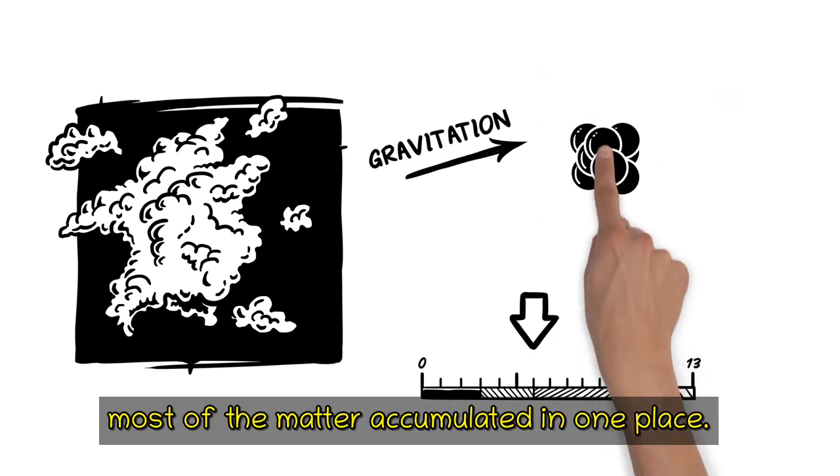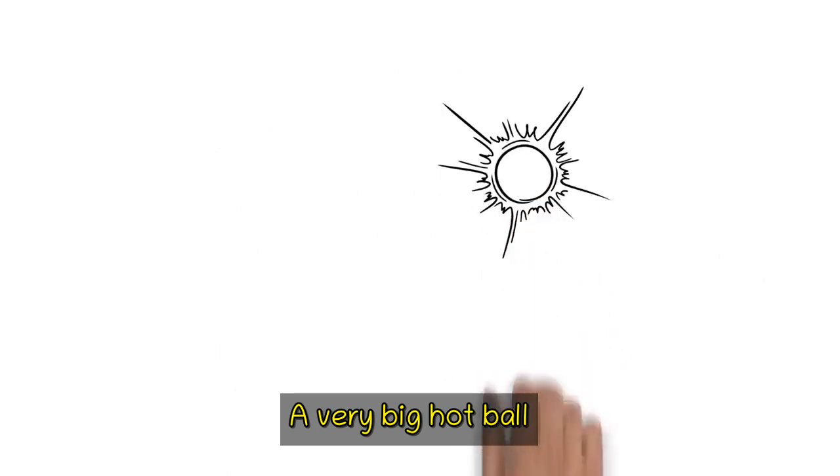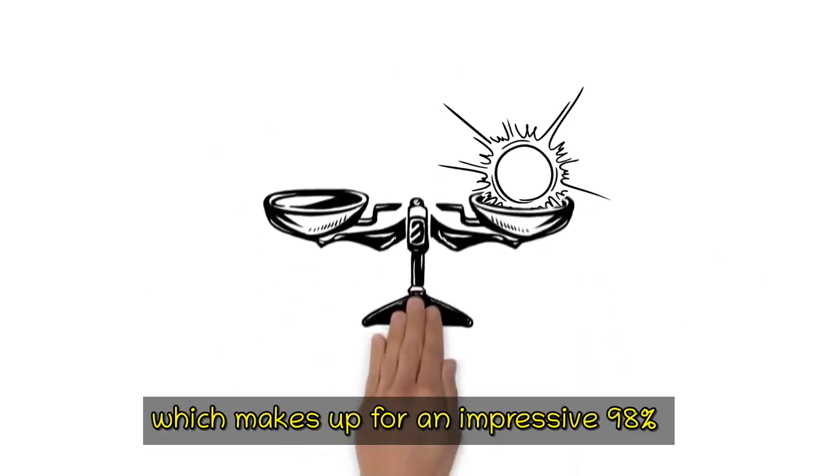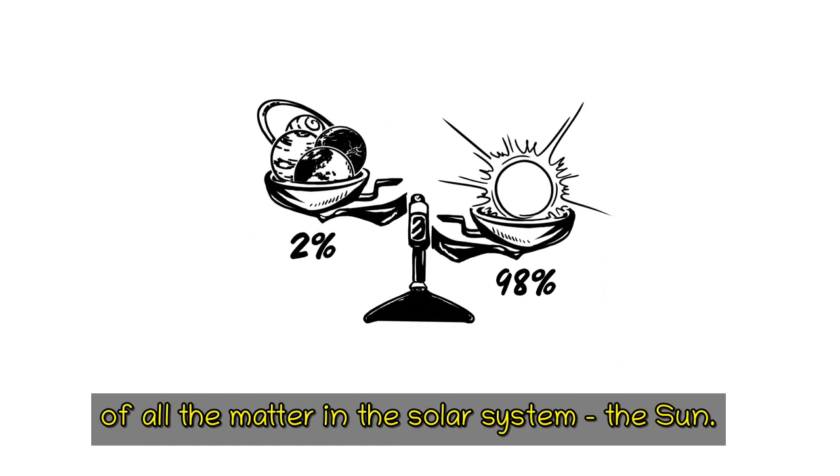Most of the matter accumulated in one place. A very big, hot ball, which makes up for an impressive 98% of all the matter in the solar system. The Sun.